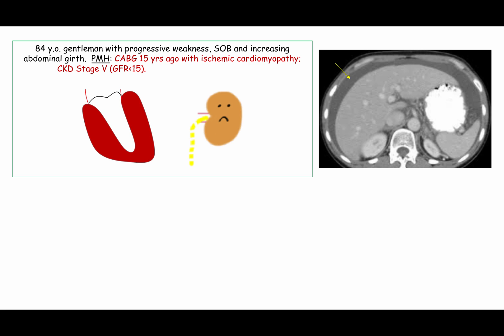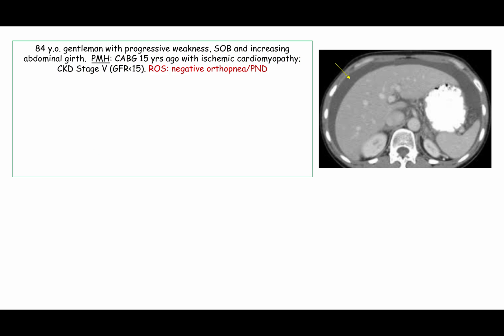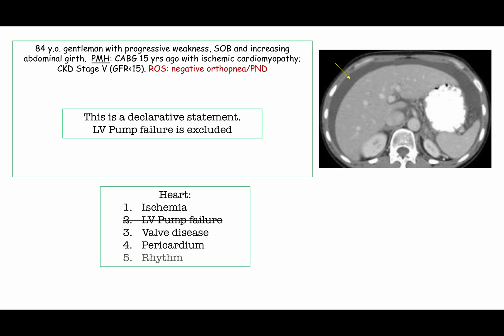His past medical history describes heart disease and kidney disease — we'll keep these in his differential diagnosis. The review of systems tells us he has no orthopnea or paroxysmal nocturnal dyspnea. When the question writers emphasize negative information like this, they're making a definitive statement about the diagnosis — telling us what the patient has or does not have. In this instance, the lack of orthopnea and PND tells us he does not have LV pump failure.